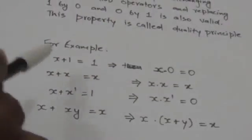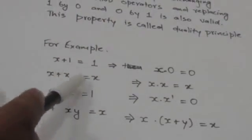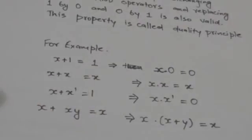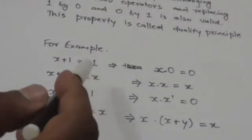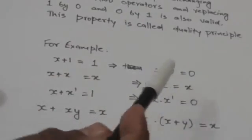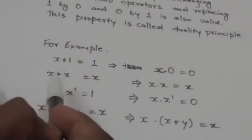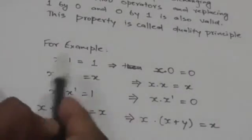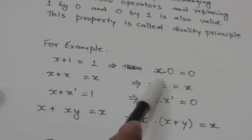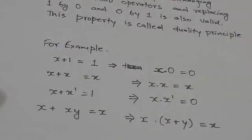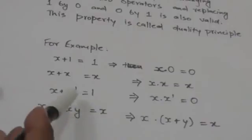Now, x + x (that is, x OR x) equals x. Its dual expression will be x AND x equals x. It is obtained by replacing the OR operator by the AND operator. Since this expression is valid, its dual will also be valid according to the duality principle.